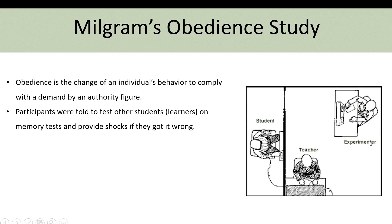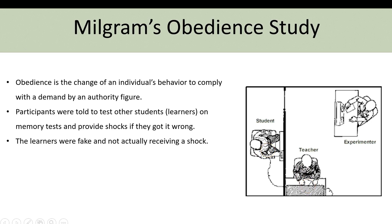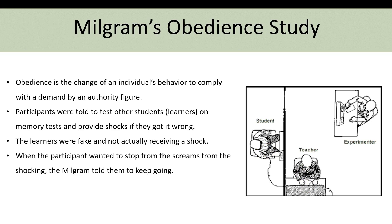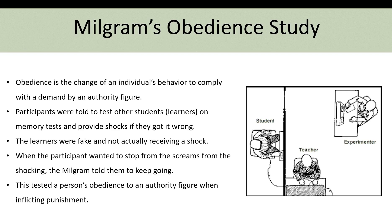In the basic setup, Milgram was the experimenter. The student was a fake student who wasn't really receiving a shock, but they screamed in response to a possible shock when the teacher or participant initiated the shock for a fake wrong answer. When the participant wanted to stop after hearing the fake screams, Milgram told him to keep going and continue the study, even though the participant did not want to — but he ultimately obeyed and continued shocking at increased levels.